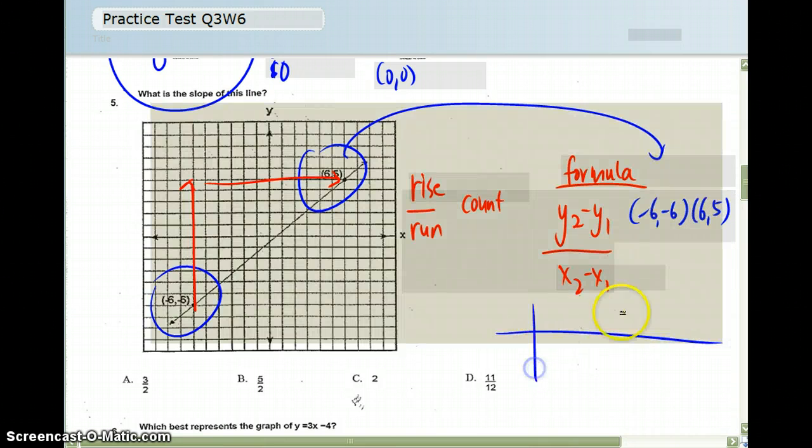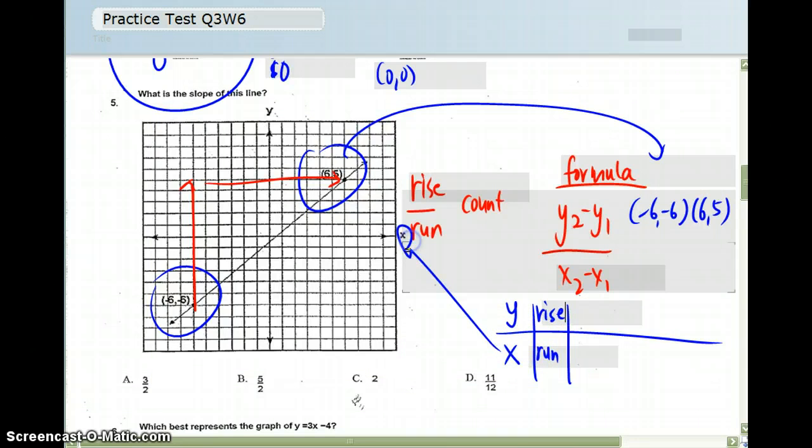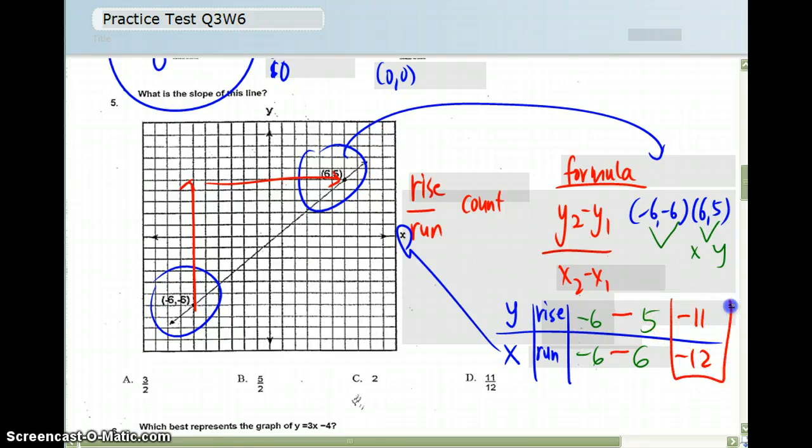I'm going to make a little chart just to kind of help me set it up. I have y's on the top and x's on the bottom, and that's because the y's are the ones that rise, and x is the one that runs. I'm just going to plug those numbers in from the points. Then my formula tells me I'm going to subtract them in between. So this gives me negative 11 over negative 12, and that's my answer.